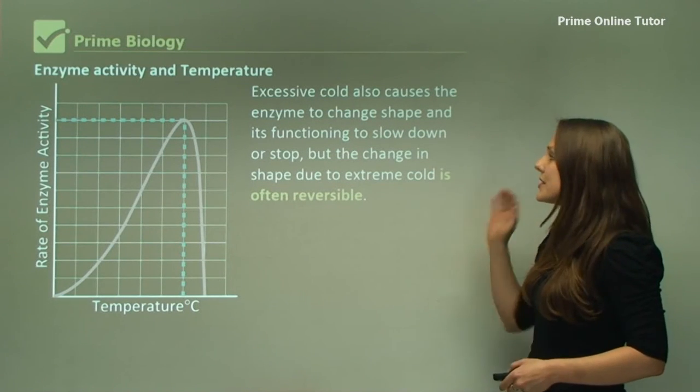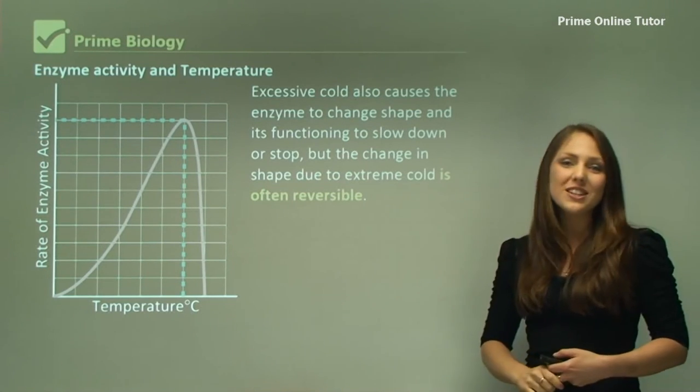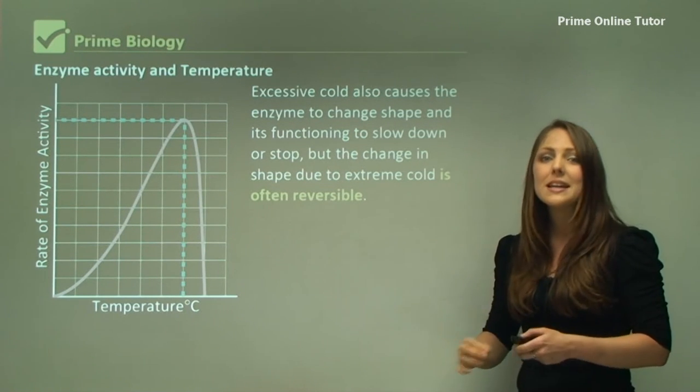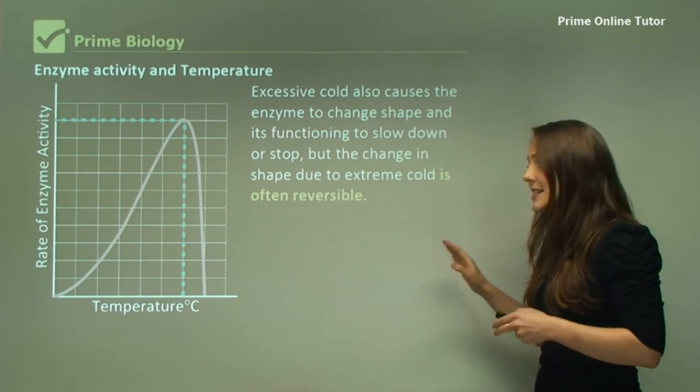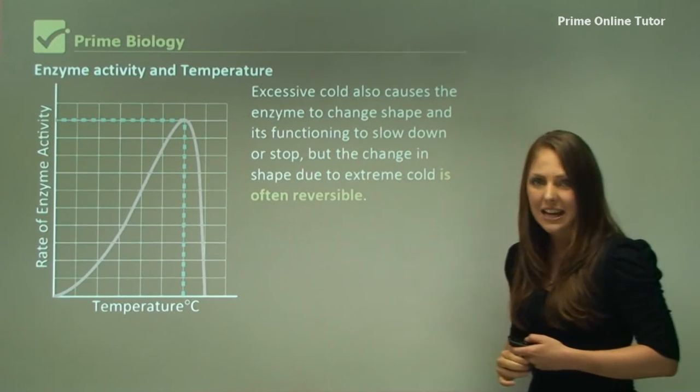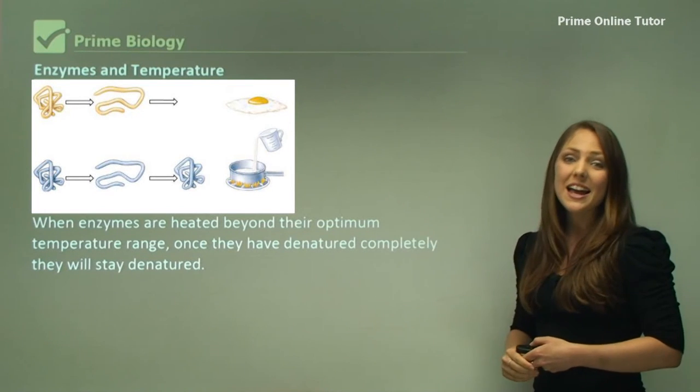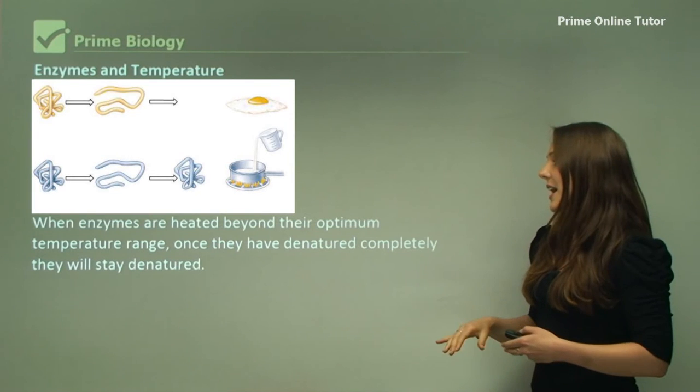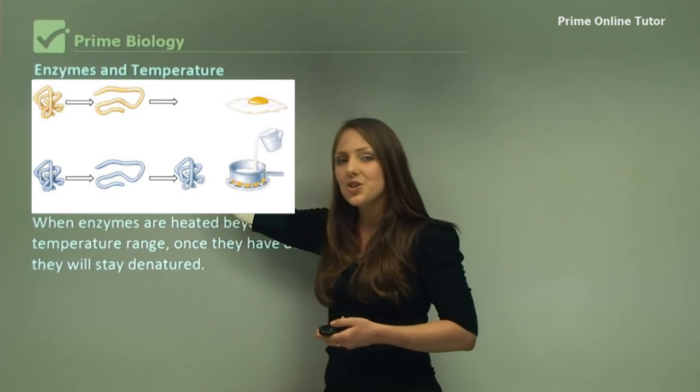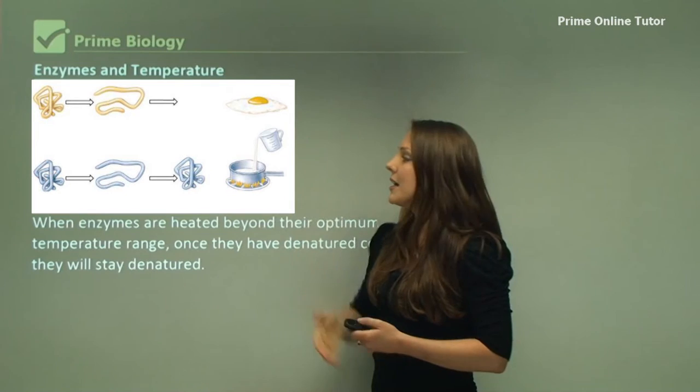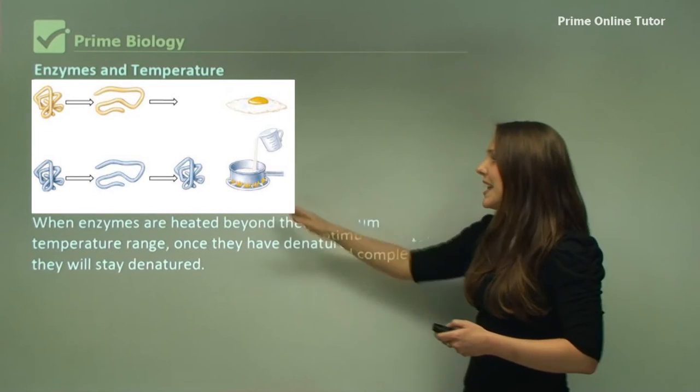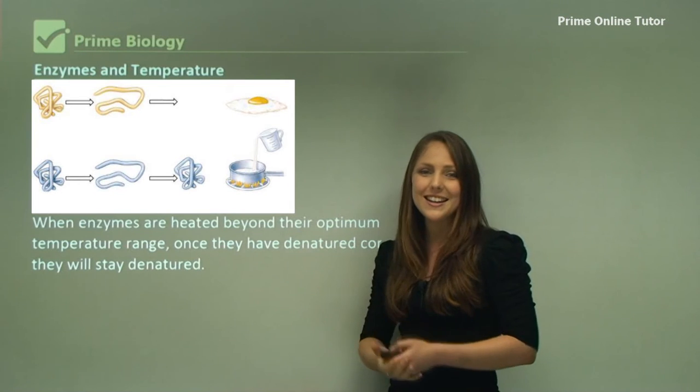Excessive cold also causes an enzyme to change shape and its functioning to slow down as shown in this graph here. But the change in shape due to extreme cold can often be reversed. So in this case here extreme cold the enzyme may be able to regain its shape and not stay denatured. When enzymes are heated beyond their optimum temperature range they have denatured completely and they will stay denatured. An example in this diagram here we have a protein that denatures when an egg is cooked. A protein might denature but it might actually be able to go back to its original form if only warmed slightly. So it depends on how much heat it's exposed to.